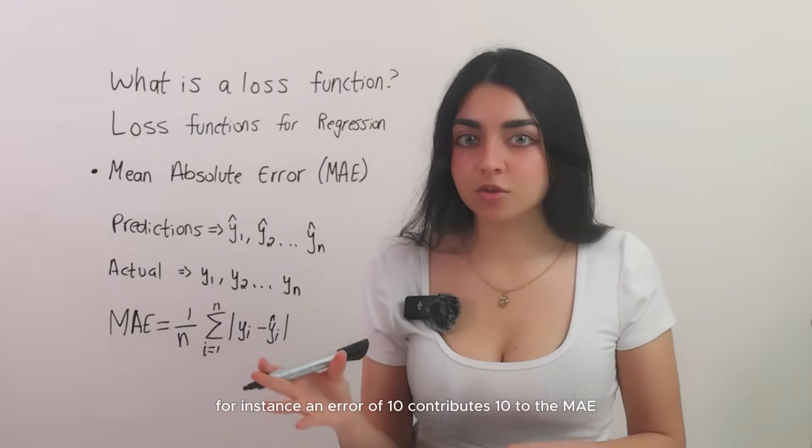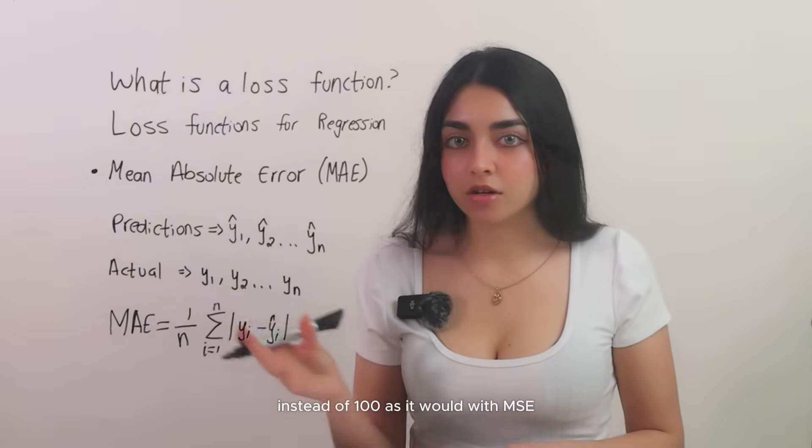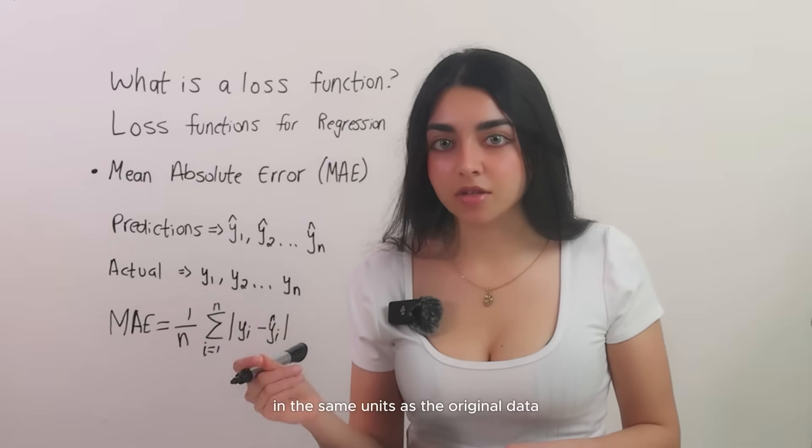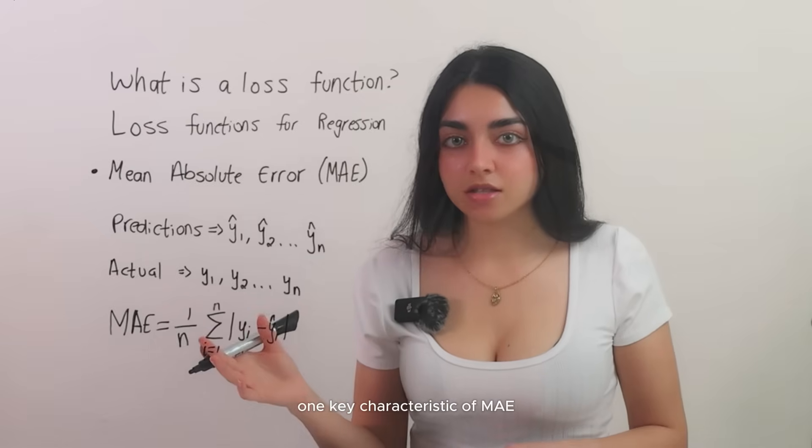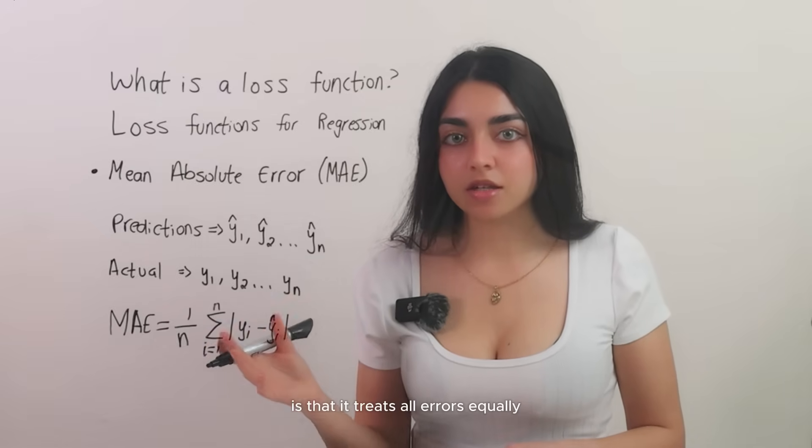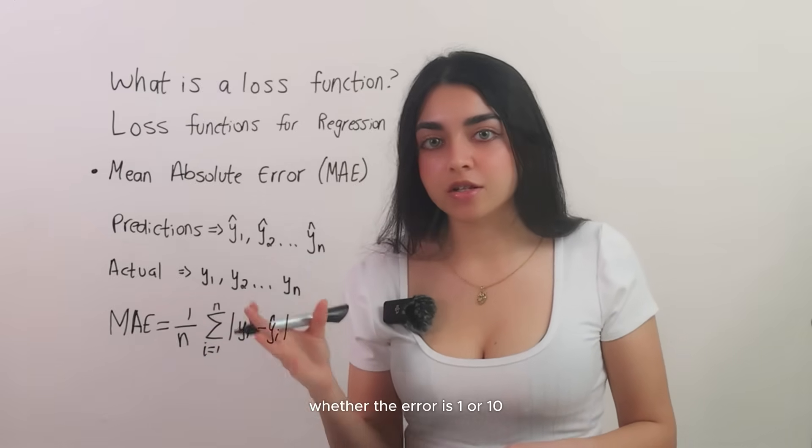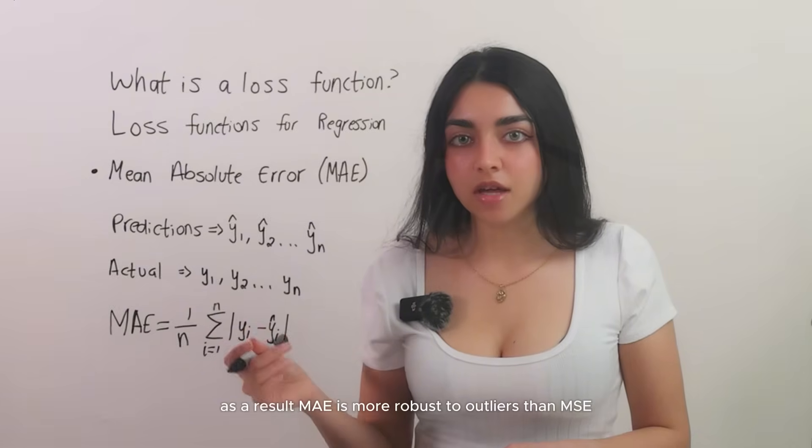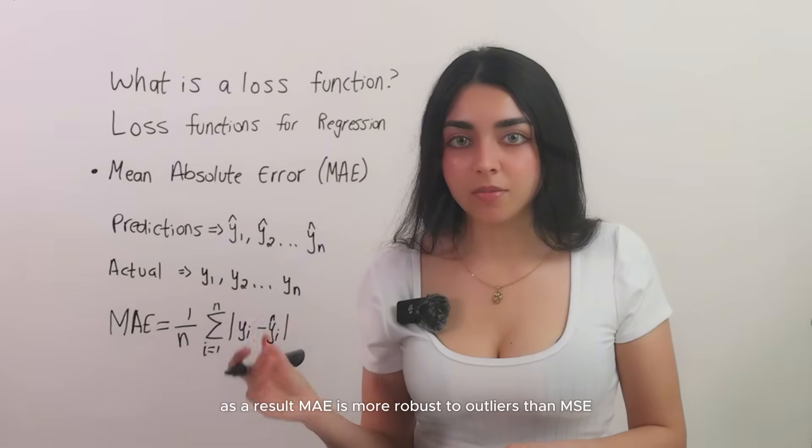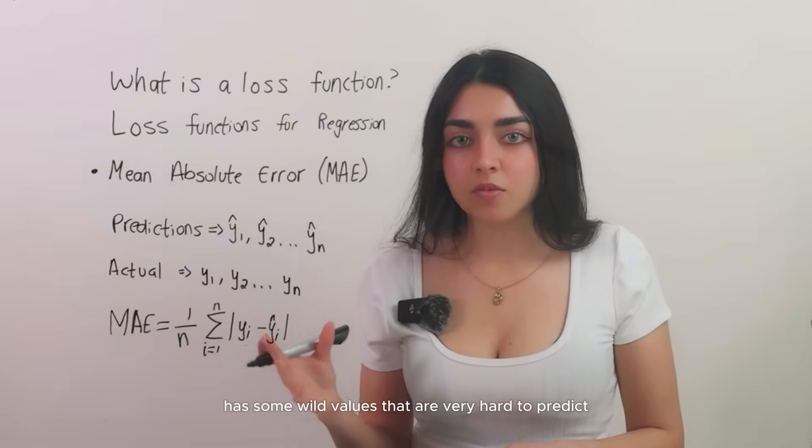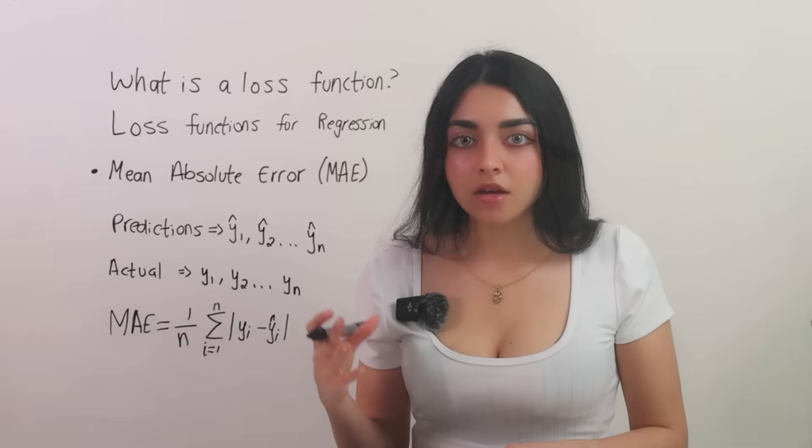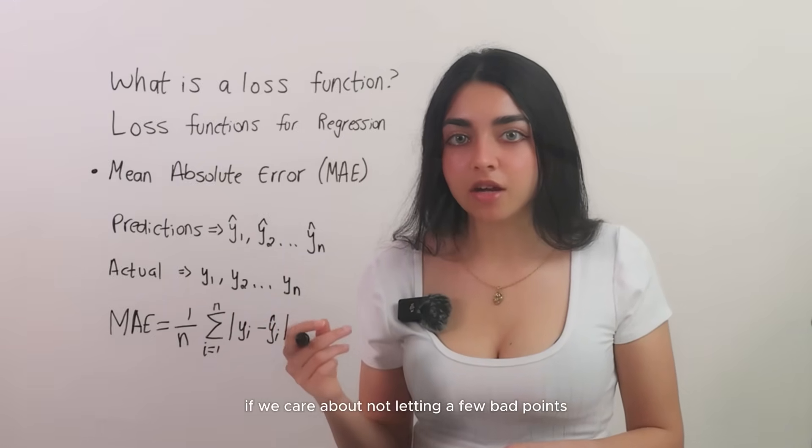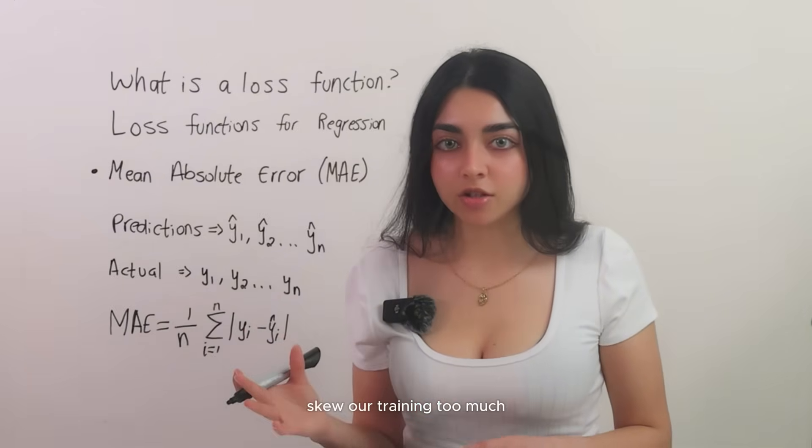For instance, an error of 10 contributes 10 to the MAE, instead of 100 as it would with MSE. MAE gives us the average size of the error in the same units as the original data. One key characteristic of MAE is that it treats all errors equally, whether the error is 1 or 10. There is no squaring to amplify the larger errors. As a result, MAE is more robust to outliers than MSE. If our dataset has some wild values that are very hard to predict, MAE wouldn't blow up as much as MSE would. This can be an advantage if we care about not letting a few bad points skew our training too much.